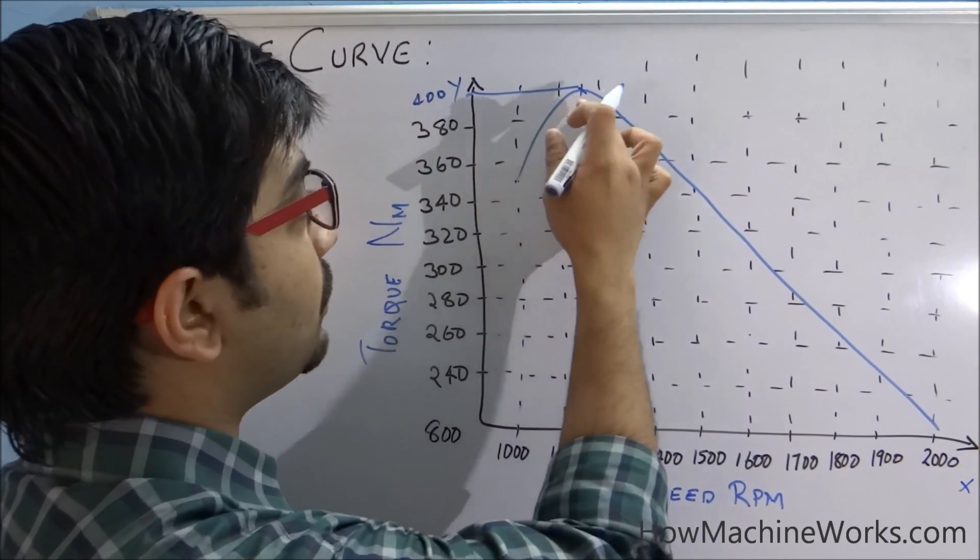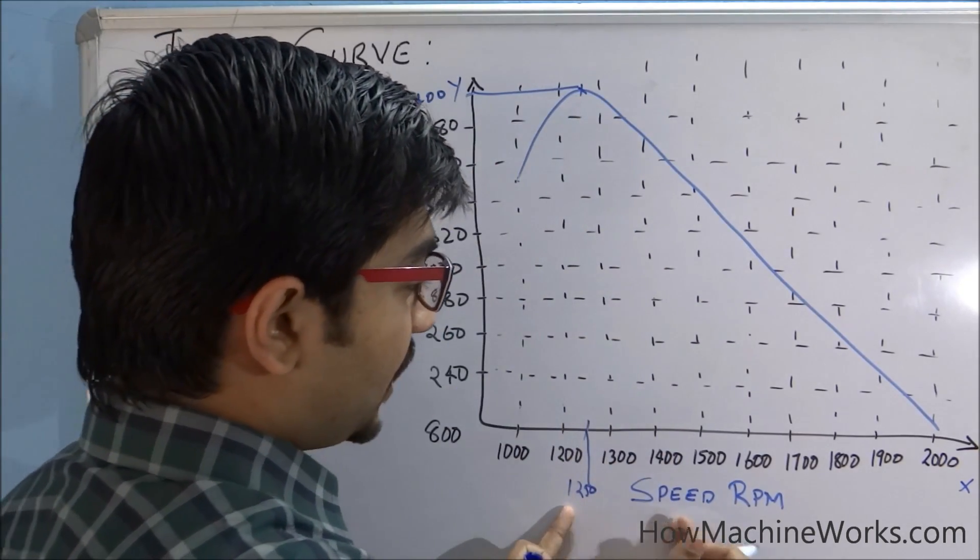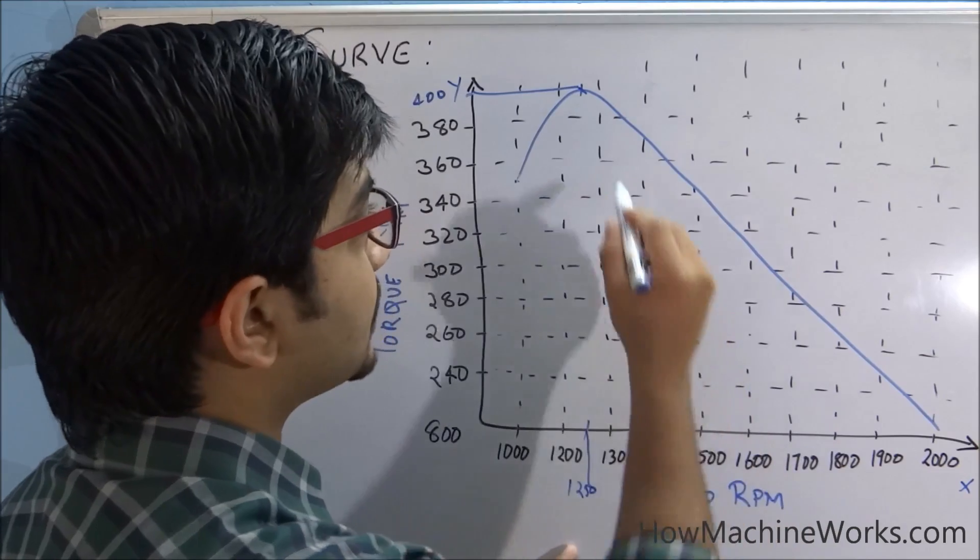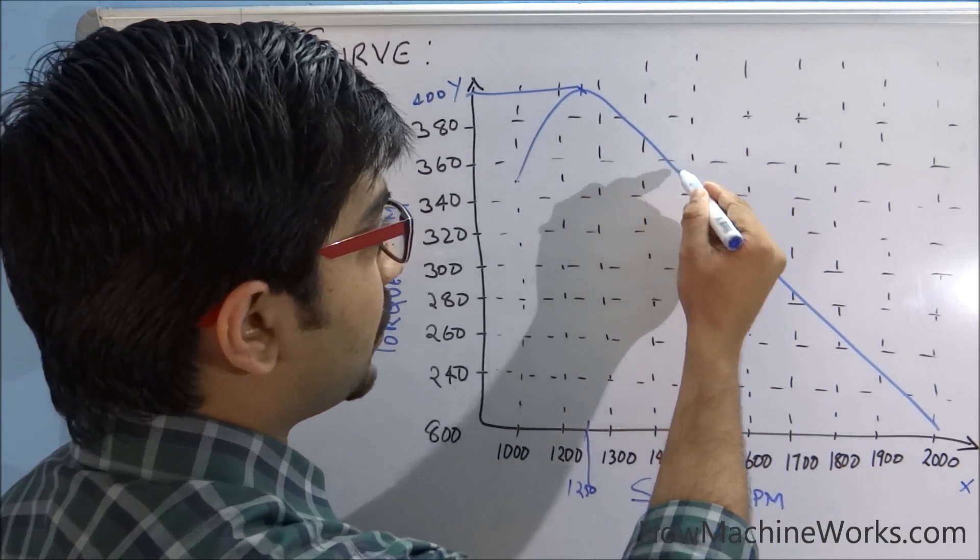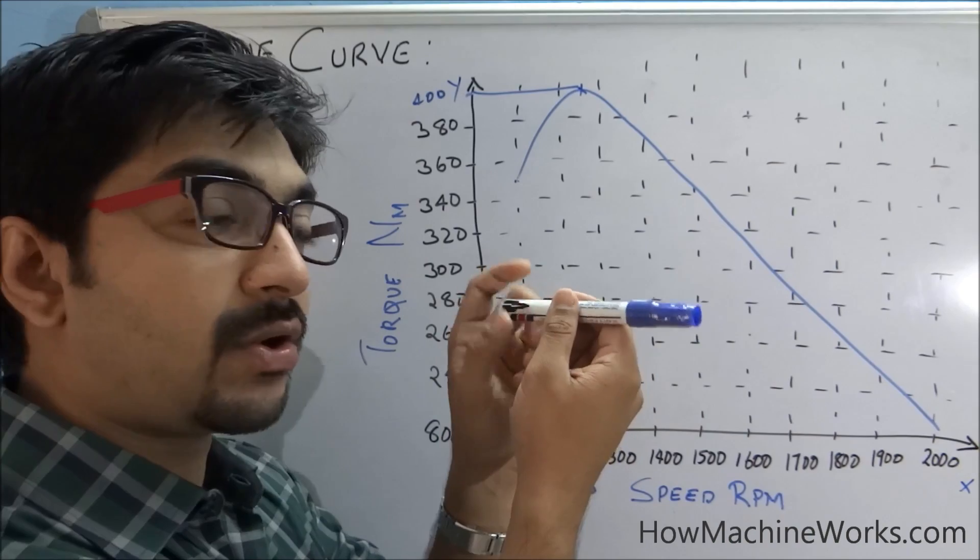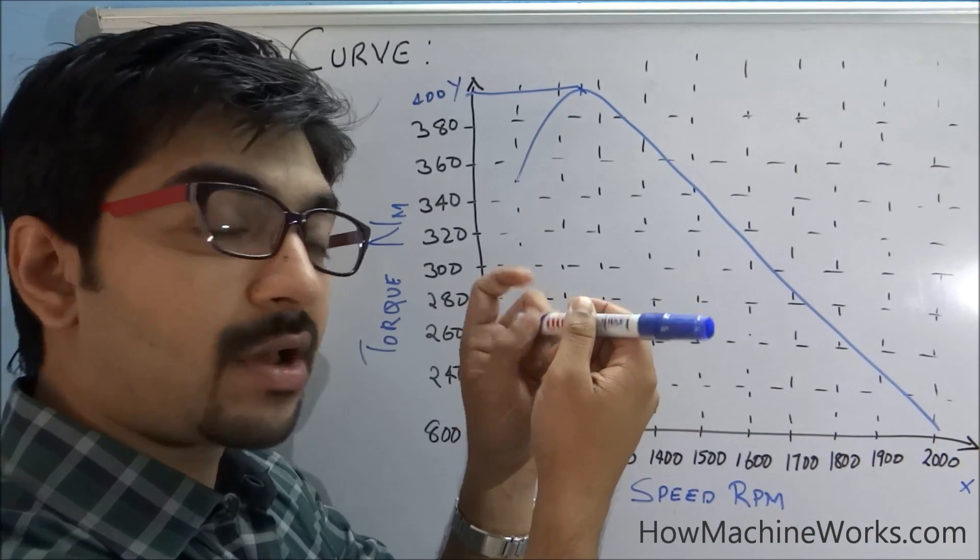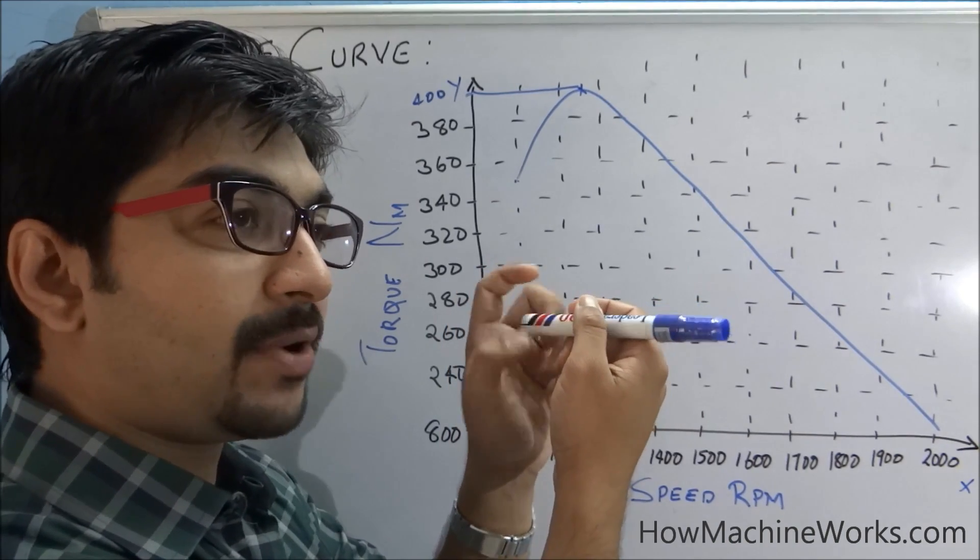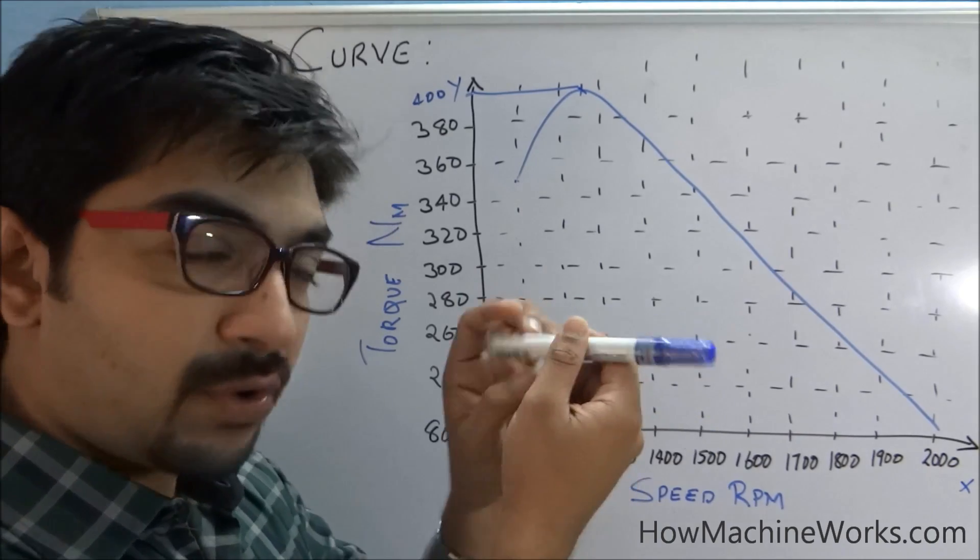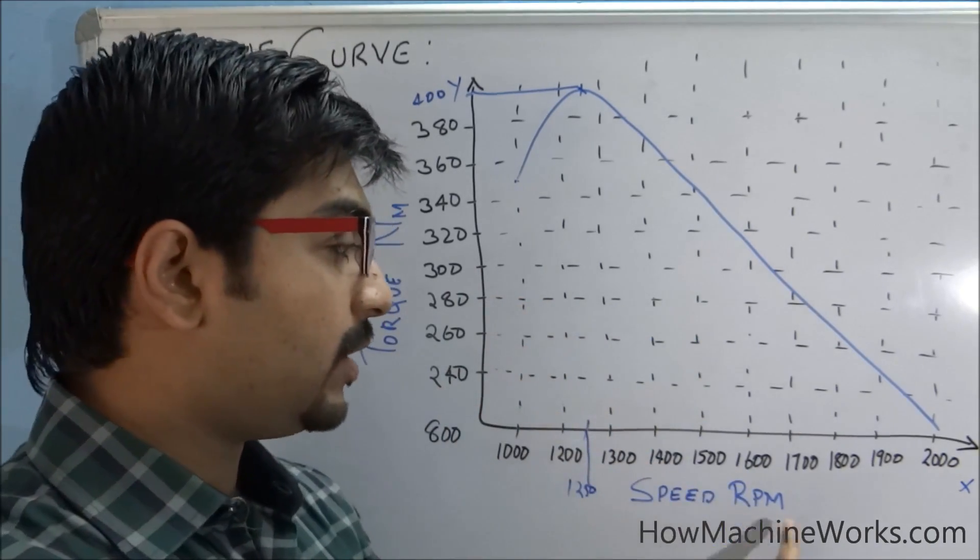Then as the speed increases or the RPM increases, the torque tends to reduce. You can see RPM is the speed of revolution, revolutions per minute. So this is rotating at a particular speed. If I say 50 rotations in a minute, that is revolutions per minute, that is 50 RPM.